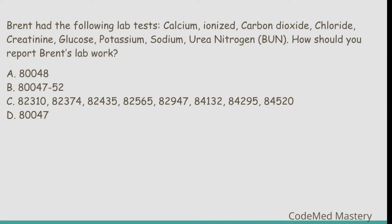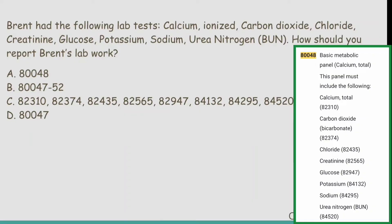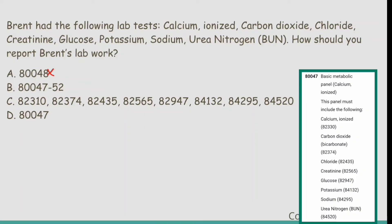Now let us solve a question related to organ or disease oriented panels. Brent had the following lab tests: calcium ionized, carbon dioxide, chloride, creatinine, glucose, potassium, sodium, urea nitrogen. How should you report Brent's lab work? Option A is 80048. Code 80048 is for Basic Metabolic Panel Calcium Total — that panel requires calcium total, but the question mentions calcium ionized, not calcium total. So we cannot code 80048; eliminate option A.